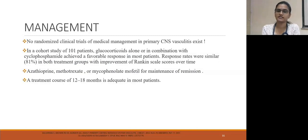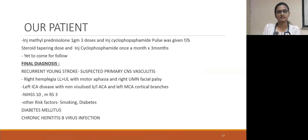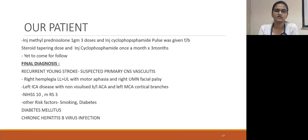Management-wise, there are no randomized clinical trials for primary CNS vasculitis. One cohort study showed that glucocorticoids alone or in combination with cyclophosphamide gave a favorable response. For maintenance, azathioprine, methotrexate, and MMF can be given. Total treatment course is 12 to 18 months, though real-time cases have shown it may require more than 18 months. In our patient, we gave pulse methylprednisolone and one dose of cyclophosphamide, and planned for a steroid tapering dose and cyclophosphamide once a month for three months, with follow-up planned. Our final diagnosis was recurrent young stroke — suspected primary CNS vasculitis — with right hemiplegia, lower limb more than upper limb, with motor aphasia and right UMN facial palsy, left ICA disease, NIHSS score of 10, modified Rankin Scale of 3, with risk factors of smoking, diabetes, and chronic hepatitis B virus infection.